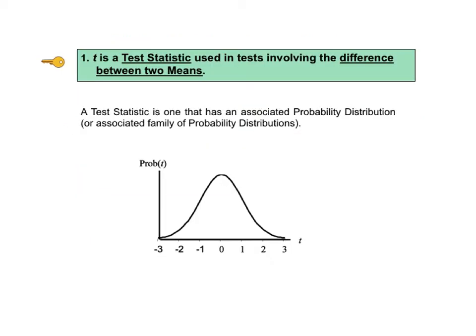Okay, now let's take a little more detailed look at each key to understanding. KTU number 1 starts out by saying that T is a test statistic, but what is a test statistic? First of all, a statistic is a numerical property of a sample like the mean or standard deviation.